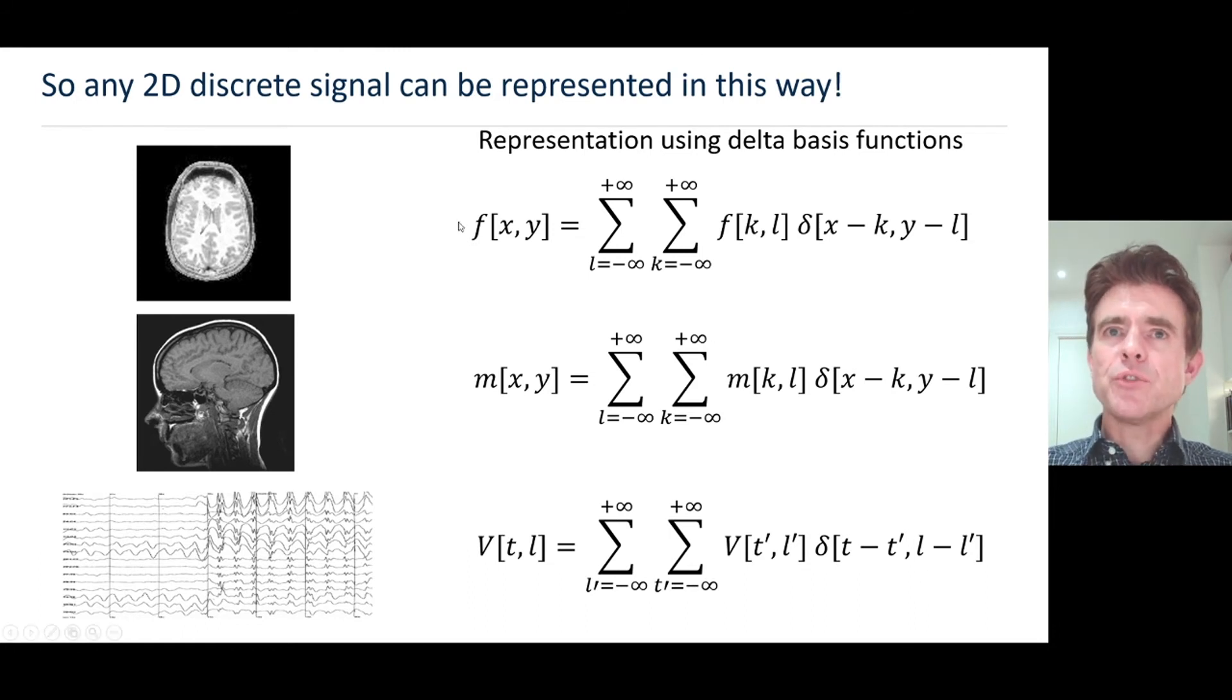We're representing these functions as weighted or collections of these delta functions shifted to every single position in the function. That's how we build up images of the brain, whether it's in MR or even if we had this set of EEG traces.